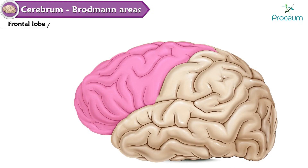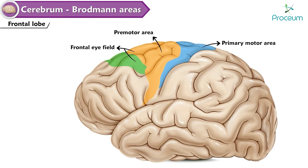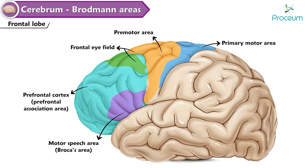Frontal lobe. It is divided into the primary motor area, premotor area, frontal eye field, motor speech area (also known as Broca's area), prefrontal cortex, and prefrontal association area.